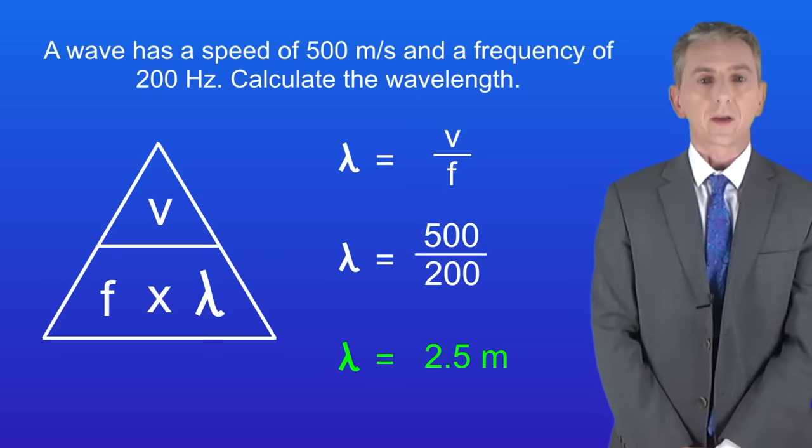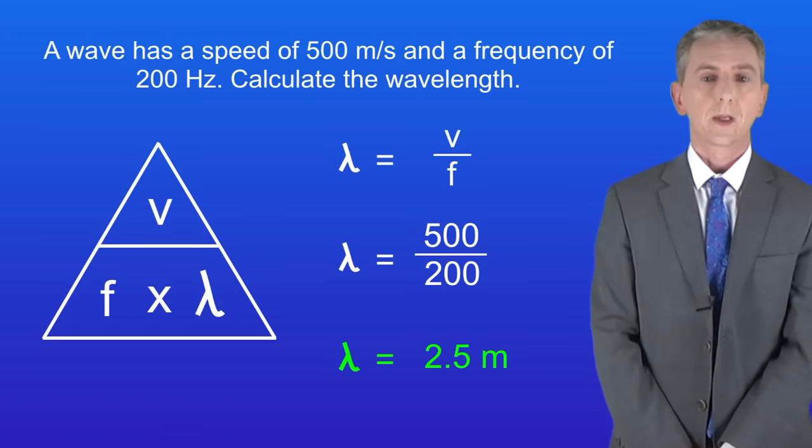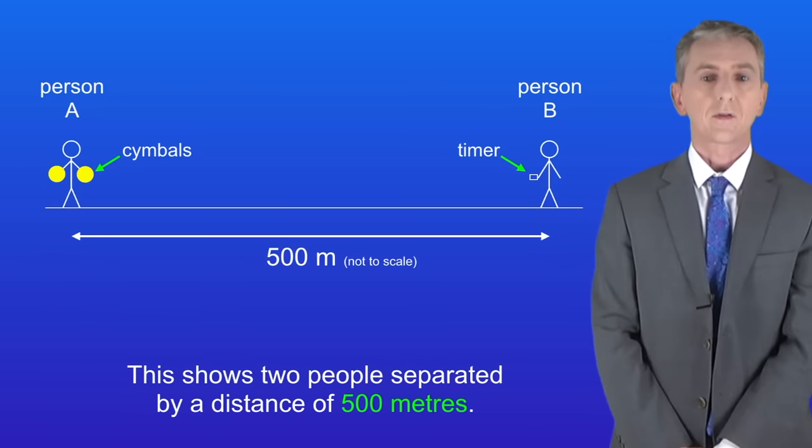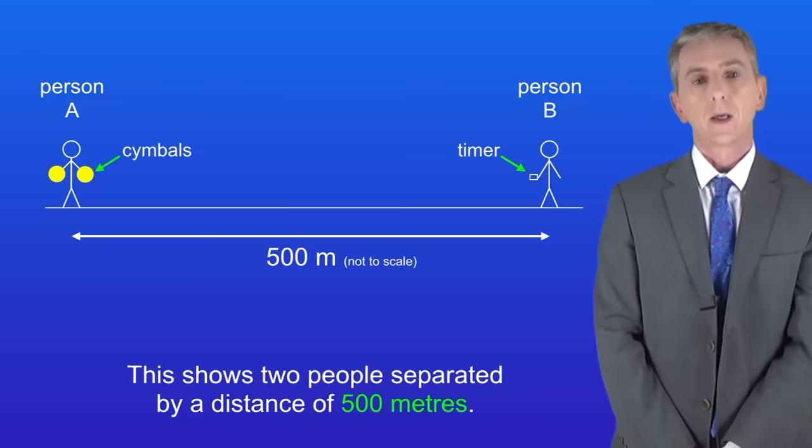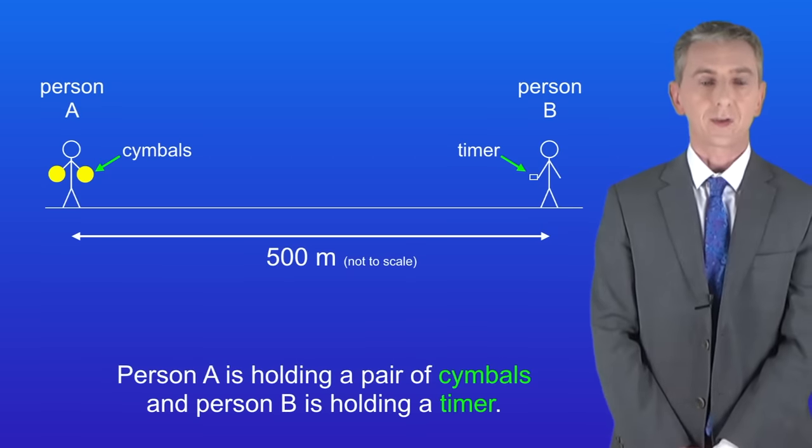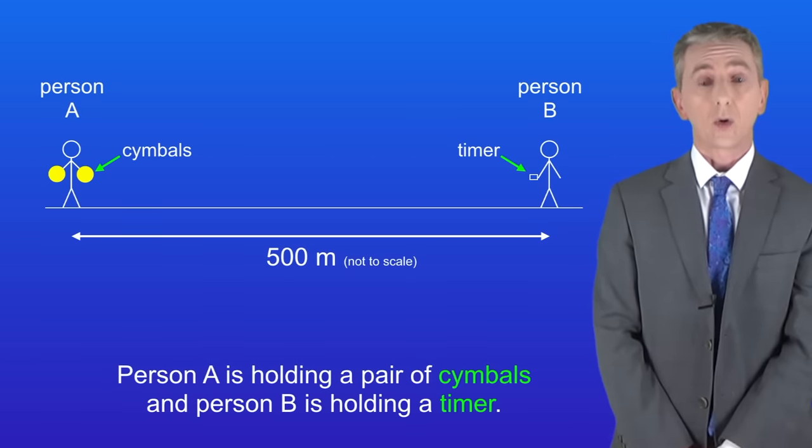Now in the exam you could be asked to describe a method to measure the speed of sound waves in air. I'm showing you here two people separated by a distance of 500 meters. Person A is holding a pair of symbols, and person B is holding a timer.